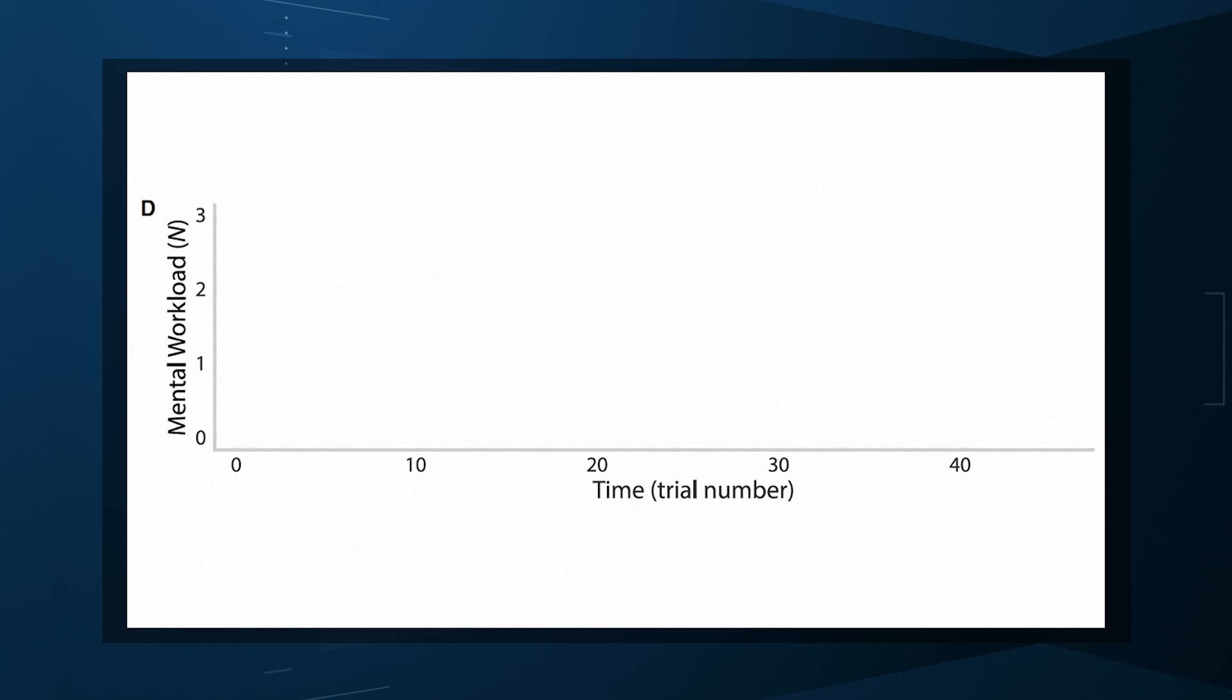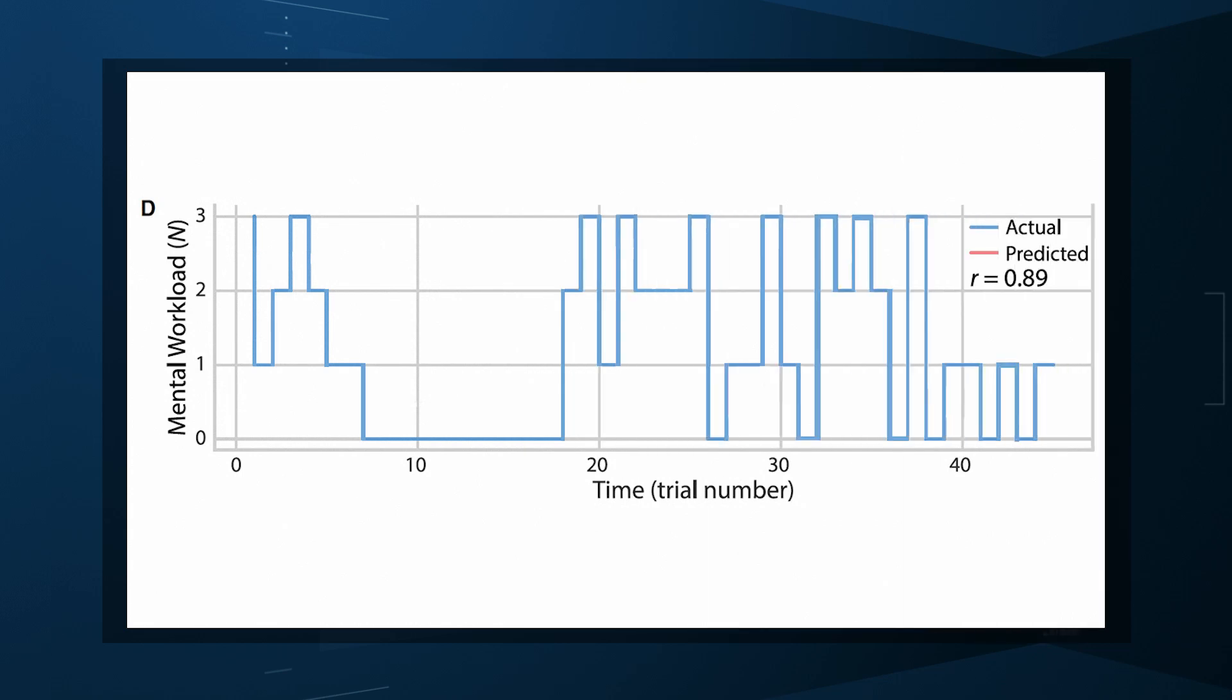Feeding its wireless output into a machine learning model, the researchers could predict the level of cognitive stress the participant was under. They show the results for the participant where the system worked the best. Bit of cherry-picking, certainly. But it will illustrate the point. The blue line indicates what level of the N-back test the participant was actually taking. The red line is what the machine learning model thought the participant was doing, just from reading their brainwaves. They match pretty well.